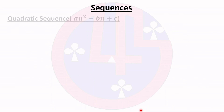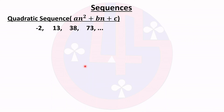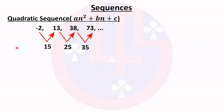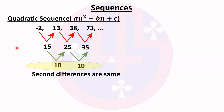For the second example: −2, 13, 38, 73. The first differences are 15, 25, and 35 — these are not the same. The second differences are 10, 10, and 10 — all the same, confirming this is a quadratic sequence.